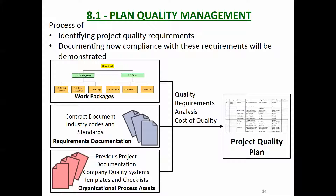The inputs are the work packages — you should be doing this for each work package as part of the quality plan. You've got the requirements documentation: for a construction project that's whatever is in the contract document, particularly the specifications and drawings. For a consultancy project there'd be industry codes, standards, the client brief, and stakeholder requirements. Then you've got your organizational process assets — things like previous project documentation. Often you just grab the last quality plan and adapt it.